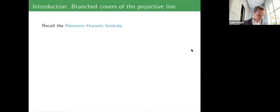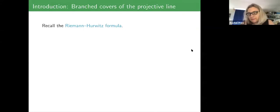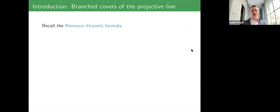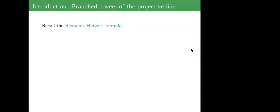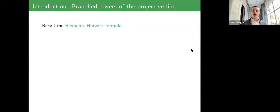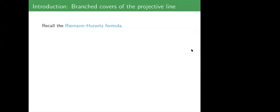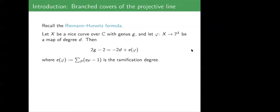Since this is a number theory and arithmetic geometry seminar, John starts with branched covers of the projective line and the Riemann-Hurwitz formula. There is a linked article by Franz Oort discussing the history. This is a fundamental way of understanding Riemann surfaces and branched covers, relating to pulling back the Euler characteristic.